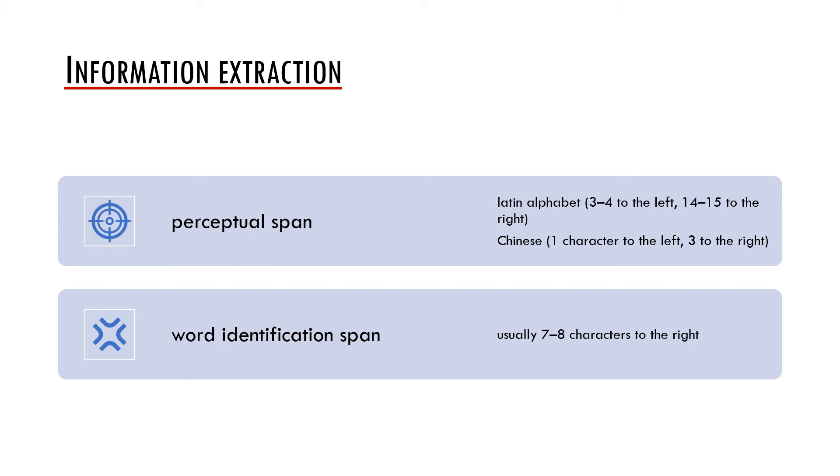One can ask why is the perceptual span so disproportionate? There are several reasons for this. For example, we retrieve also the information about what follows after the word we are fixating and therefore we need to see behind the word. Furthermore, we plan our forward saccades already while fixating a certain area and the perceptual span may help us to do this effectively.